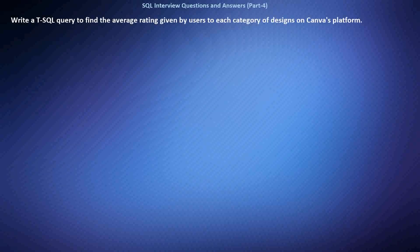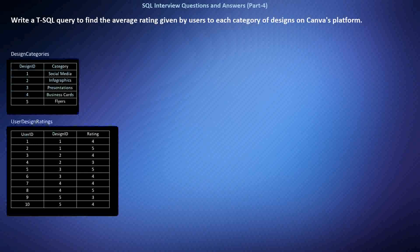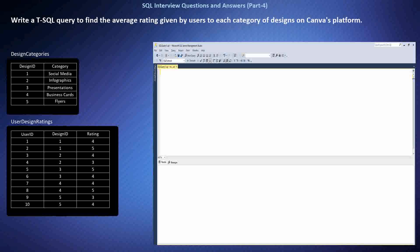Write a SQL query to find the average rating given by users to each category of designs on Canva's platform. We want to analyze the average rating given by users to different design categories, querying from two tables: one for design categories and another for user ratings. This SQL query joins the DesignCategories and UserDesignRatings tables on the design ID, groups results by category using GROUP BY, and computes the average rating using the AVG function.